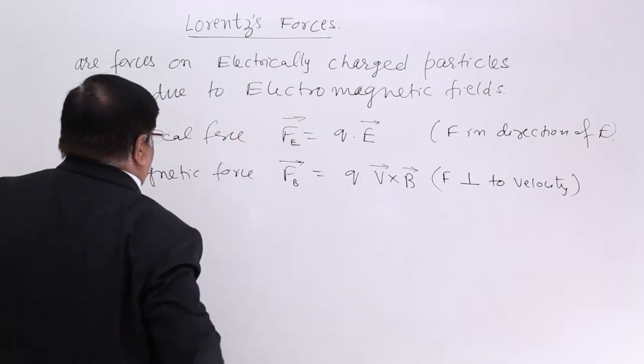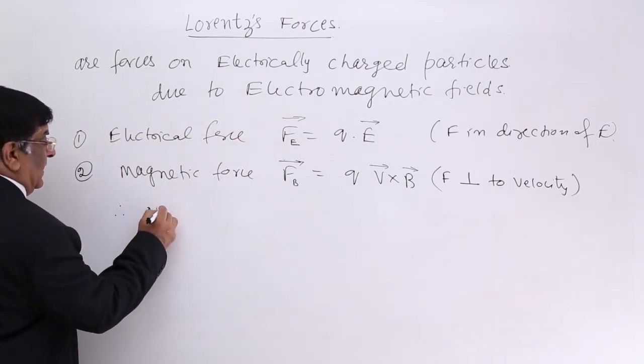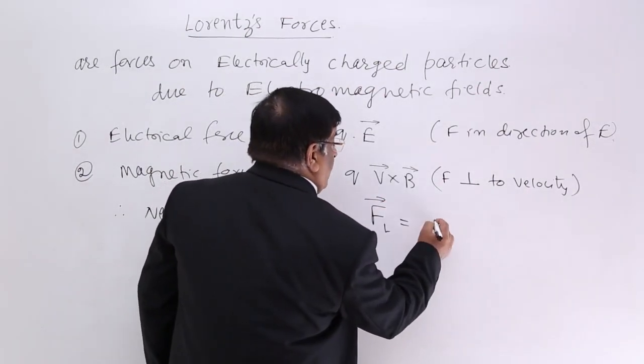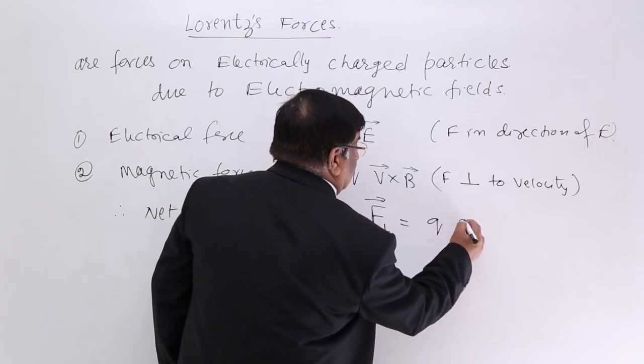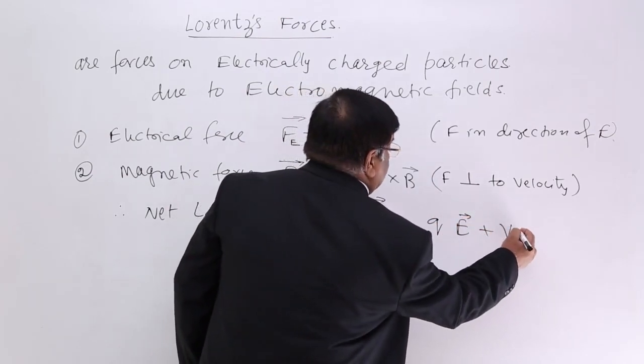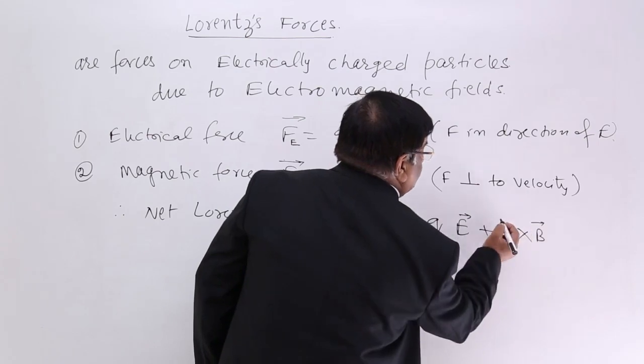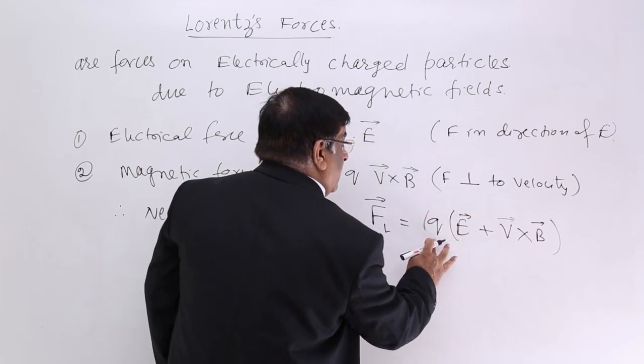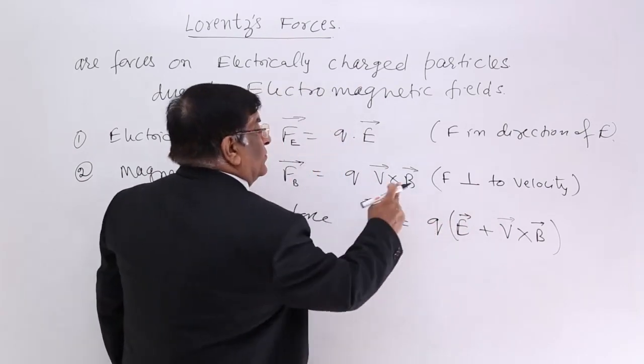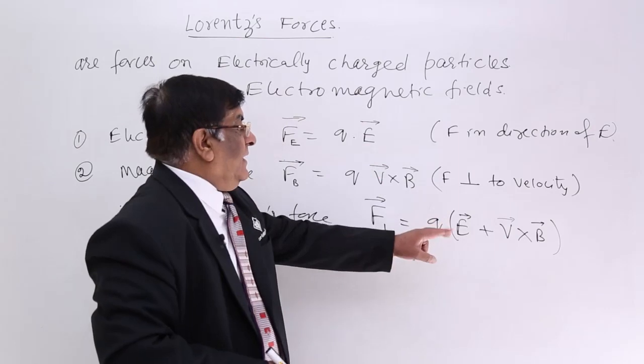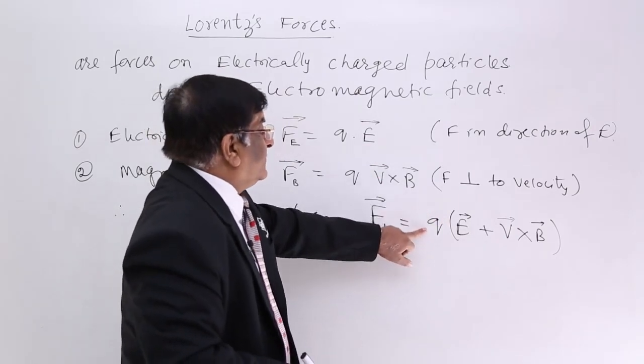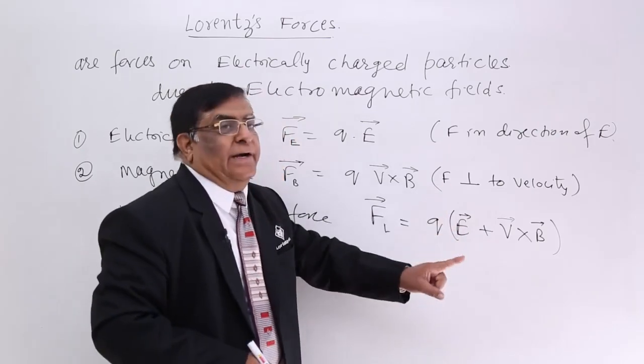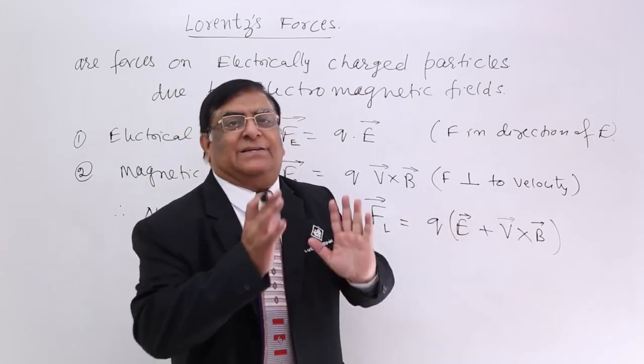So these are the two, therefore net force F Lorentz is equal to QE plus V cross B. So Q is common to them. So this force is electrical and now this force controls any charge Q if there is electric field and magnetic field both present at a space.